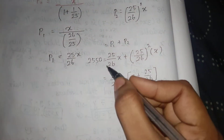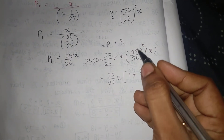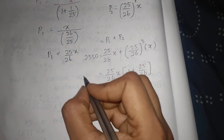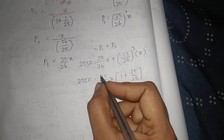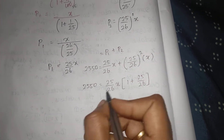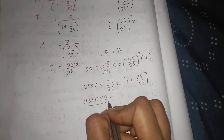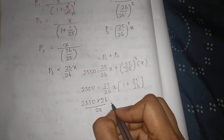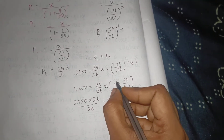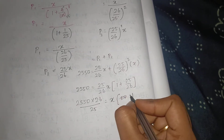So we have 2550 = 25x/26 into (1 + 25/26). Rearranging: 2550 × 26/25 = x × (1 + 25/26). Now (26/25 + 1) simplifies: 26 plus 25 divided by 25 gives 51/25. So 2550 × 26/25 equals x × 51/26.